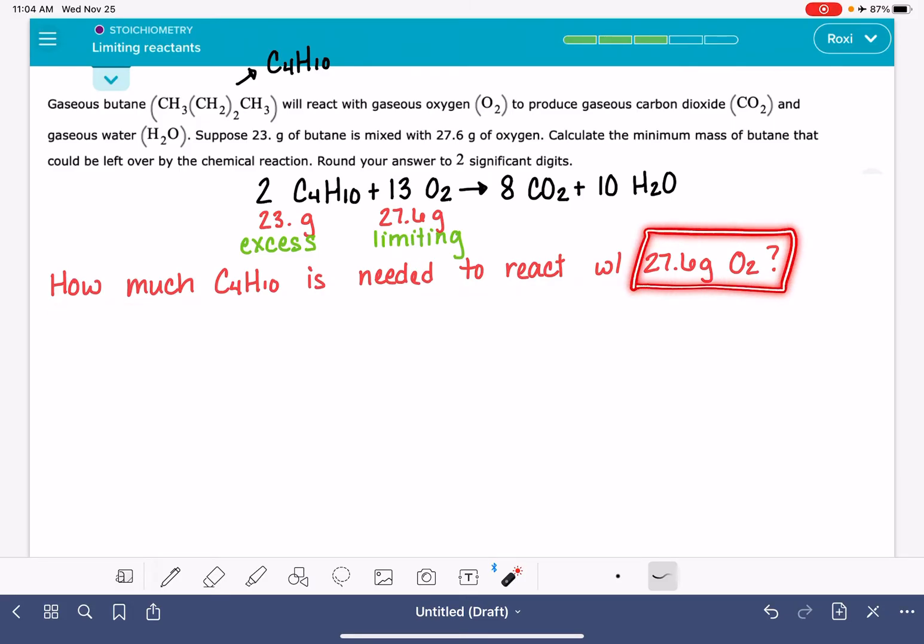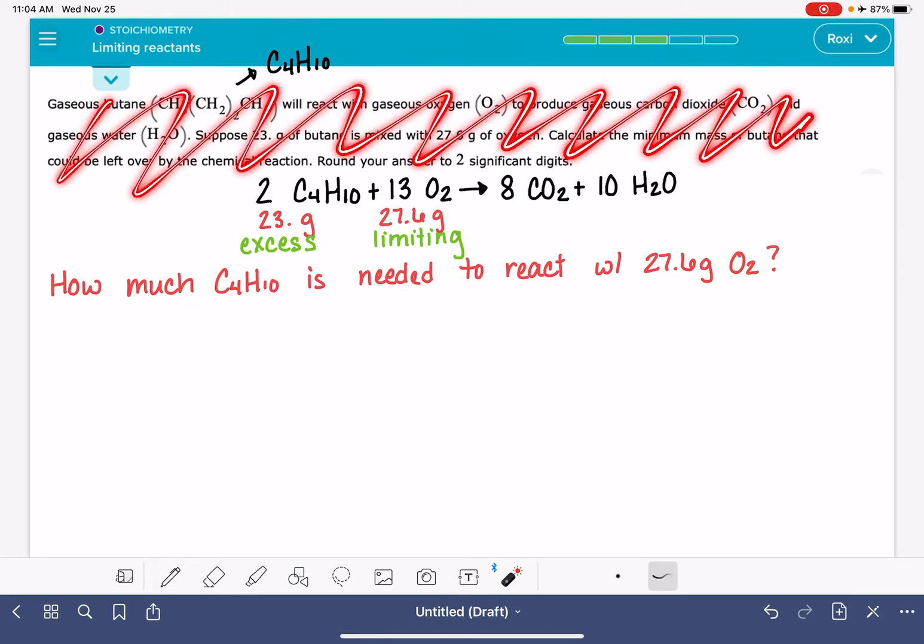If I know that this is my limiting reactant, well, then let's figure out how much C4H10 do I actually need? I know I have 23 grams, but I know that that's more than what I need. So how much do I actually need? And if we don't pay attention to any of this stuff up here just for a little while, and we focus on this question, just this question, this is a simple, straightforward stoichiometry problem.